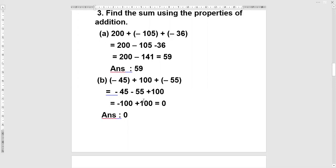Next step is minus 100 plus 100. These are additive inverse of each other, and when we add them we get zero. Similarly, you can do the remaining parts of this sum. Thank you so much for watching.